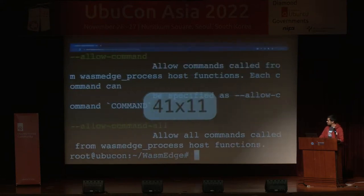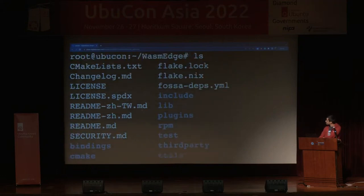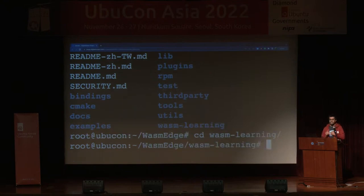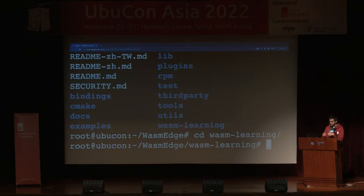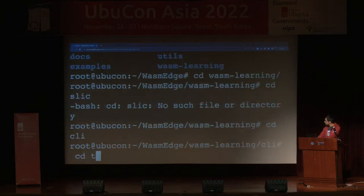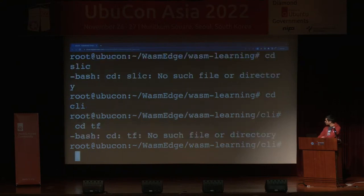I'll go back to my container and navigate to the specific folder for the machine learning example. The example I'll be running is TF Lite — TensorFlow Lite — which allows you to run machine learning models and do machine learning inference on lower-powered devices. I'll go to that specific folder and also quickly showcase how the source code compiles into WebAssembly.